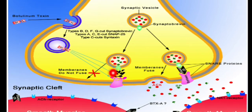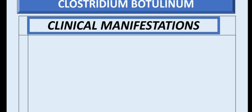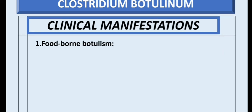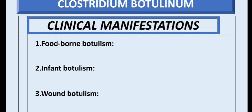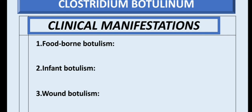There are three main clinical presentations: foodborne botulism, infant botulism, and wound botulism. Foodborne botulism features cranial nerve palsies, muscle weakness, and respiratory paralysis. Respiratory paralysis is the most common cause of death because paralysis of the diaphragm stops breathing.